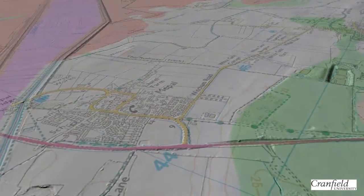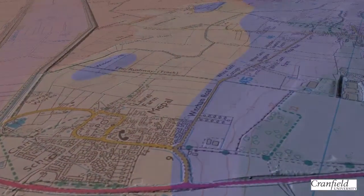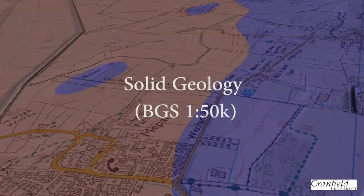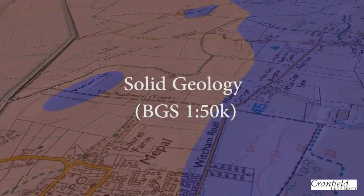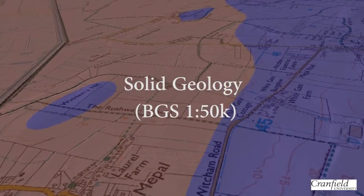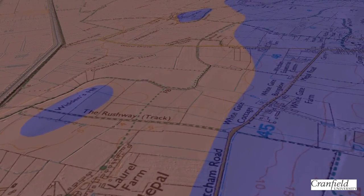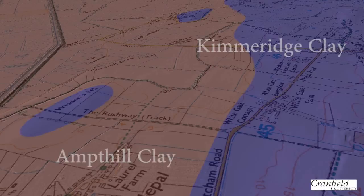Moving on, the superficial geology layer that we've now turned on shows the distribution of these deposits. Once again, this is derived from the British Geological Survey's 1:50,000 scale mapping, and this includes both the Ampthill and the Kimmeridge clays.